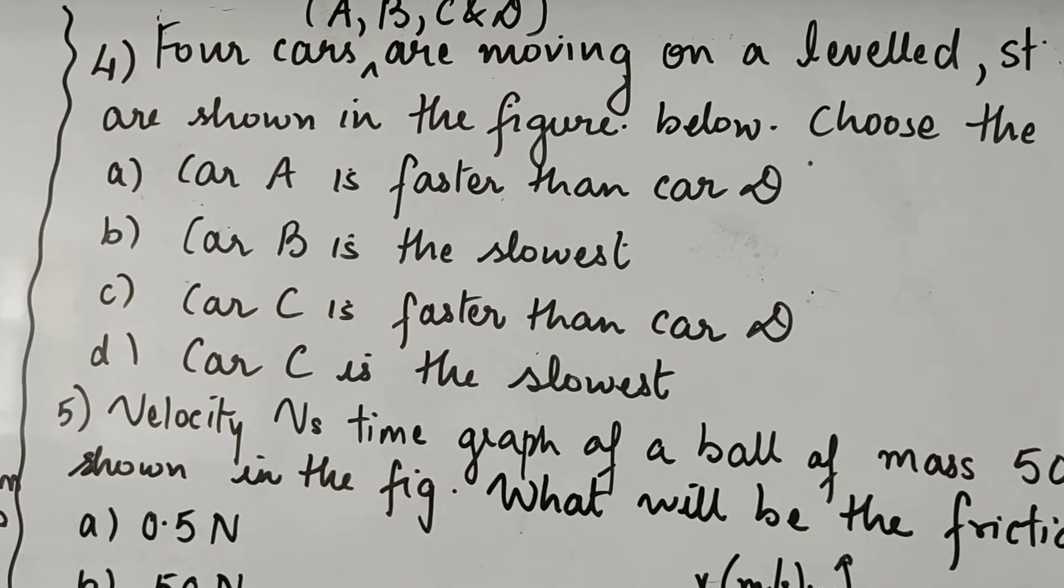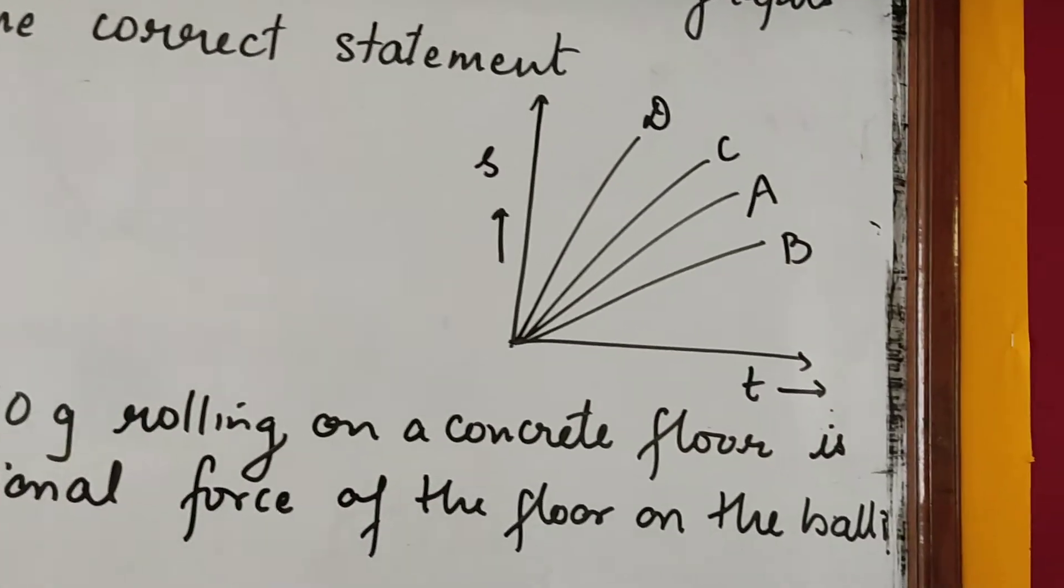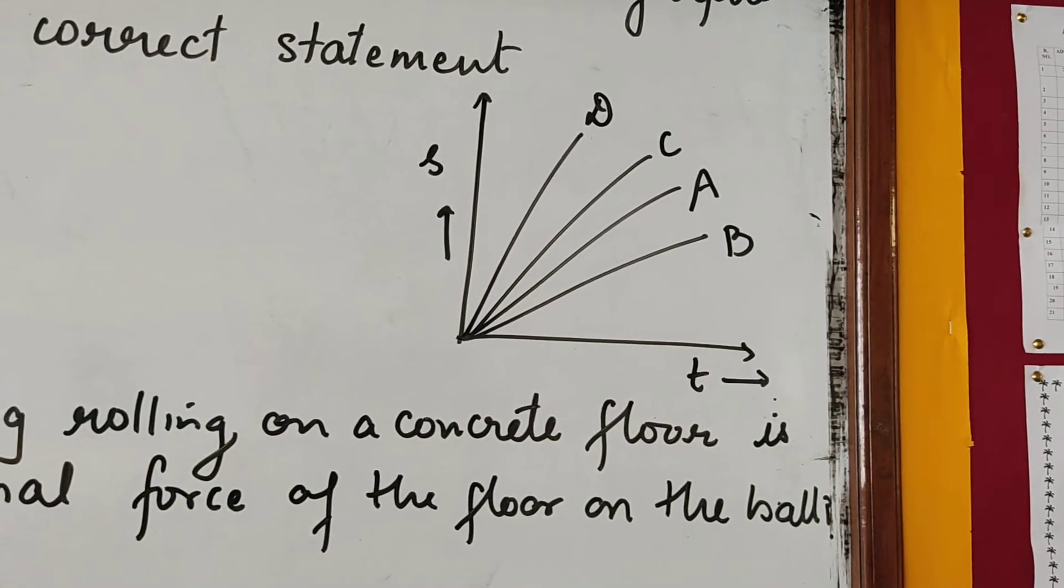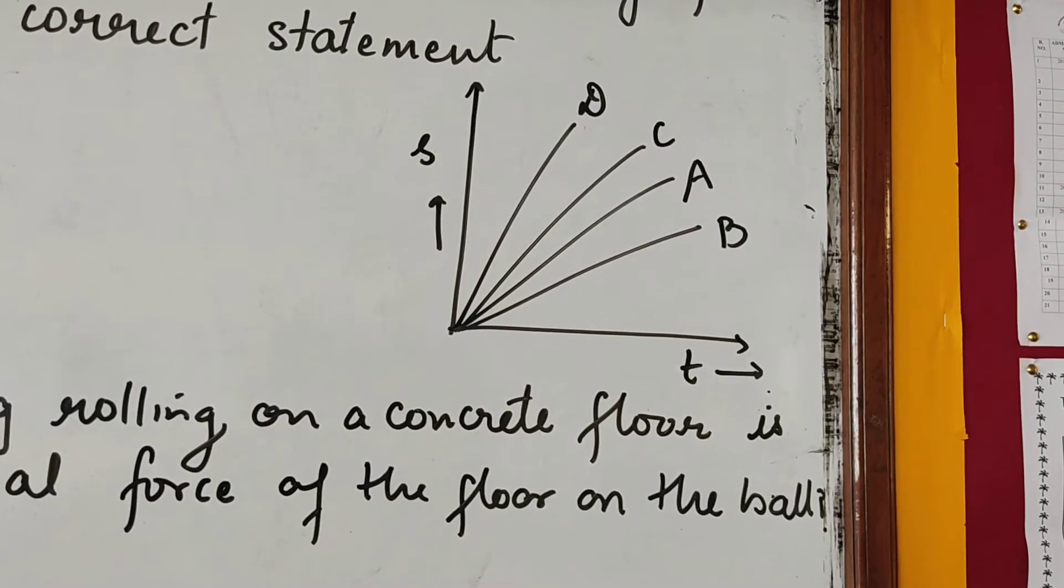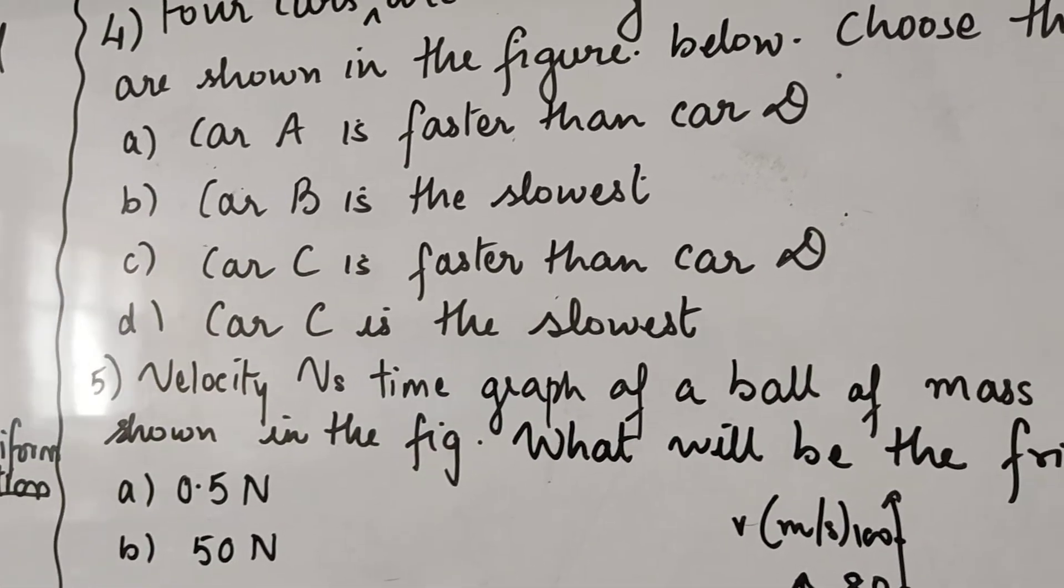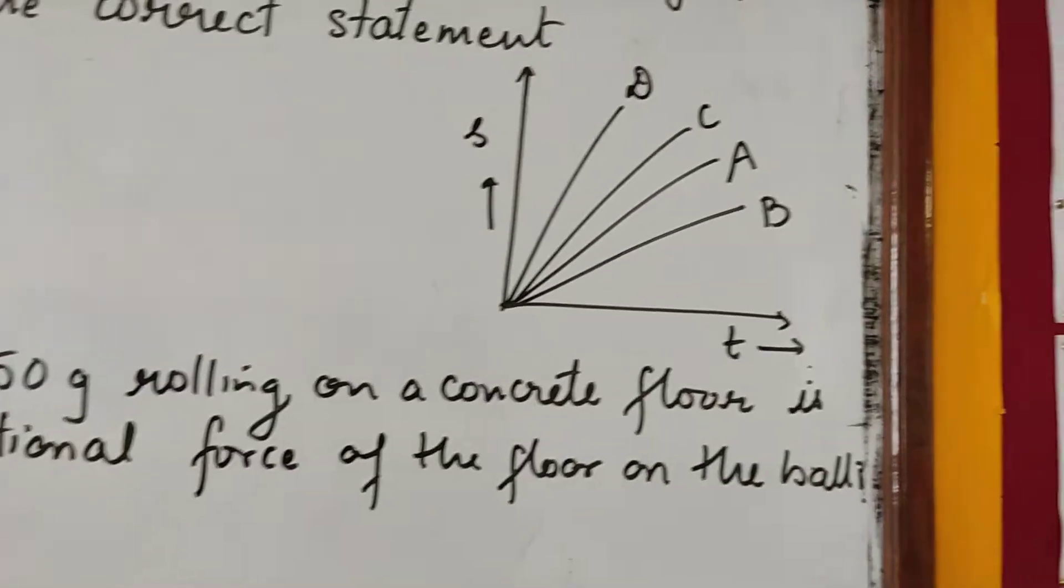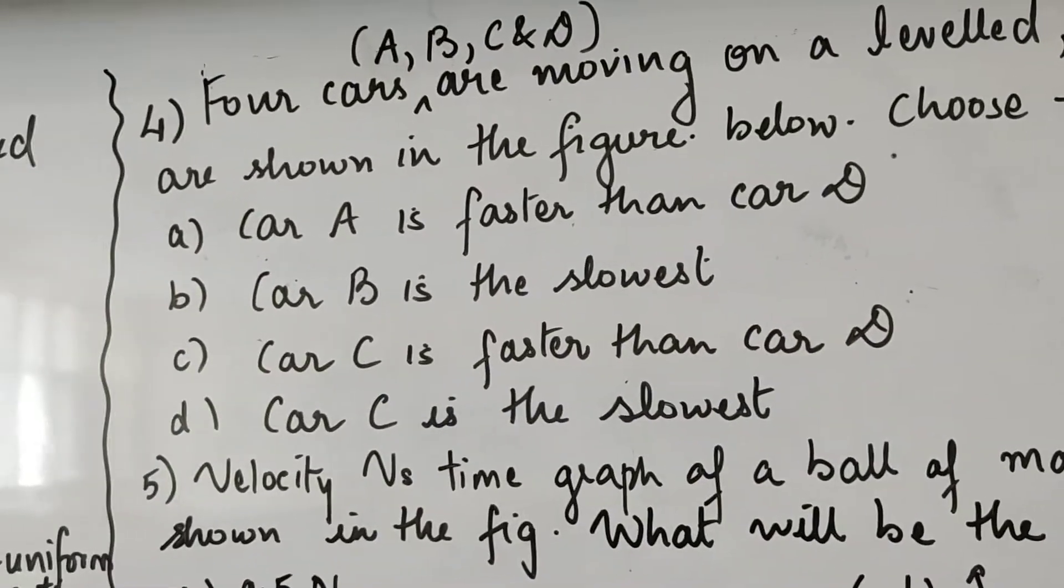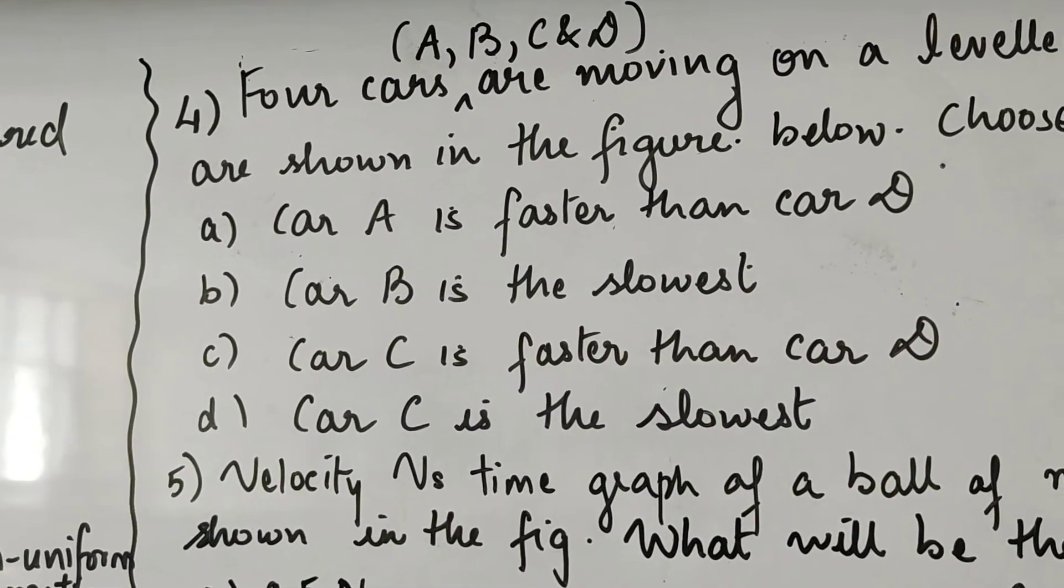And let us have a look at the other options also. Car C is faster than car D. Car C, no. Car C is slower than car D because it is having less slope than car D. Last is car C is the slowest. As we have already seen, here car B is the slowest. So we know that B is the correct option. That is car B is the slowest.